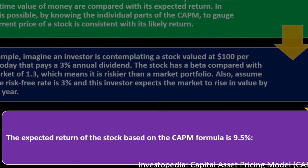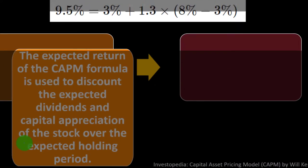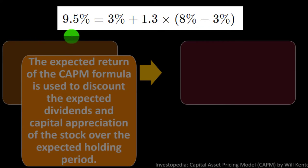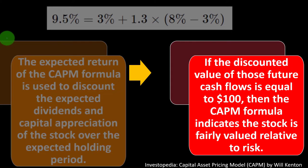The expected return of the stock based on the CAPM formula is 9.5%: 3% plus 1.3 times (8% minus 3%). The expected return from the CAPM formula is used to discount the expected dividends and capital appreciation of the stock over the expected holding period. If the discounted value of those future cash flows equals $100, then the CAPM formula indicates the stock is fairly valued relative to risk.